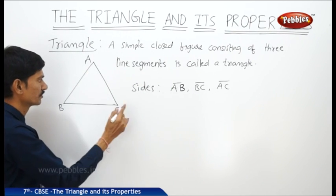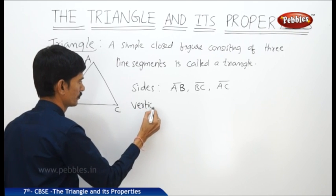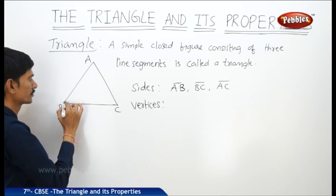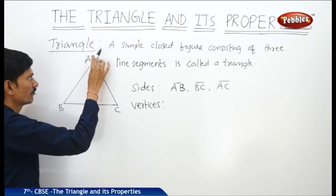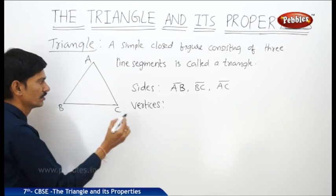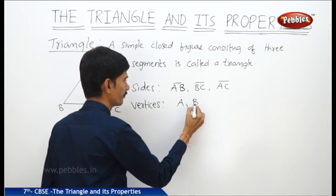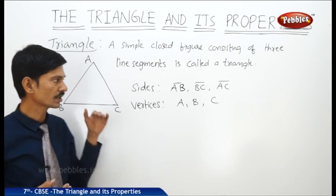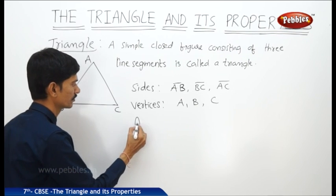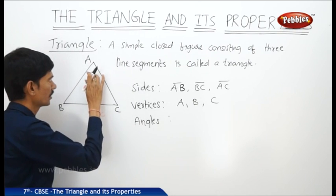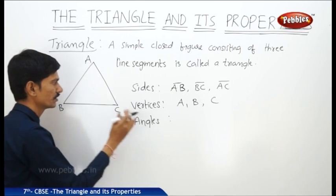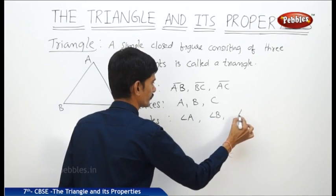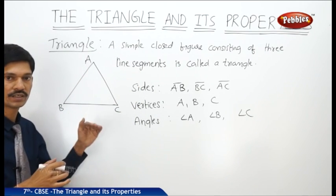What are the vertices of the triangle? Where the two line segments meet — the point of intersection of the two line segments — that is denoted by the vertices A, B, and C. At each vertex of the triangle, an angle is formed. These are called the angles of the triangle.